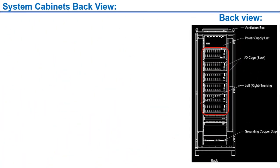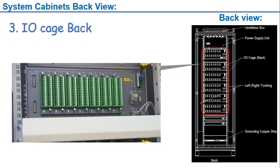The third section in the back view of the system cabinet is the I/O cage. The back side of the I/O cage contains two types of terminal boards: one for direct signal termination, and another with DB25 connectors and DB25 cables that terminate directly on the relay board or universal board. The terminal board shown in this picture is a direct termination terminal board for analog signals, but it can also be used for digital signals. There is also a power terminal block and DB25 connectors on the back side of the I/O cage.